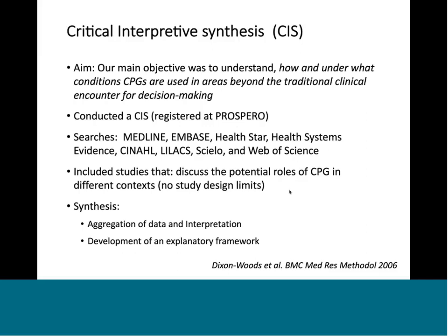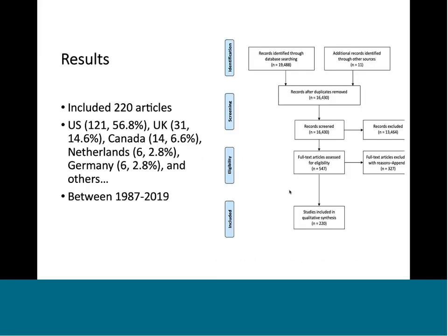This is the summary of the results. We included 220 studies after making a comprehensive review of almost 20,000 papers. Most of the evidence — more than half — came from the U.S., and the second most productive country was the UK, then Canada, the Netherlands, and Germany, which have traditionally been major players in the guidelines enterprise. We found evidence from 1987 through mostly 2019.